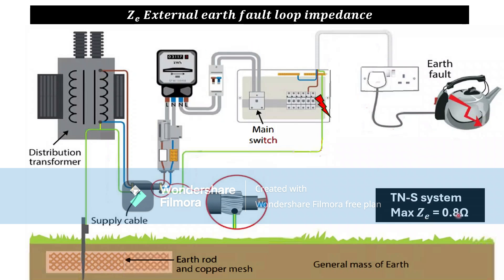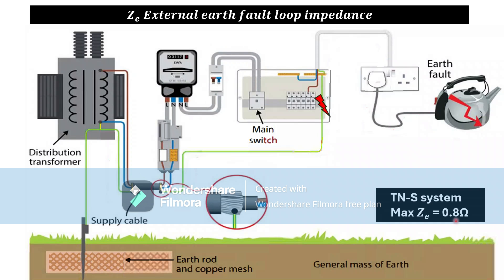The maximum Ze for a TN-S system is 0.8 ohms, so our value should be below 0.8. If it is greater than 0.8, we have to inform the DNO regarding this situation.